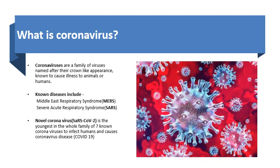Beginning with, what is coronavirus? Coronaviruses are a family of viruses among which the SARS-CoV-2 is known to be the youngest in the whole family. They are named after their crown-like appearance and are known to cause illness to animals and humans, such as the Middle East Respiratory Syndrome and the Severe Acute Respiratory Syndrome.